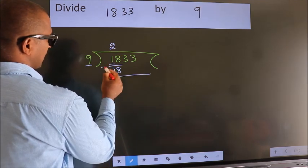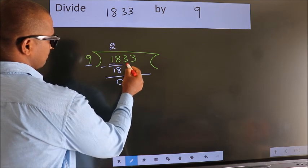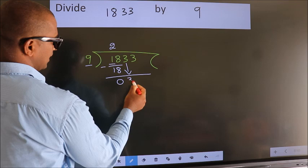Now we should subtract. We get 0. After this, bring down the beside number. So 3 down.